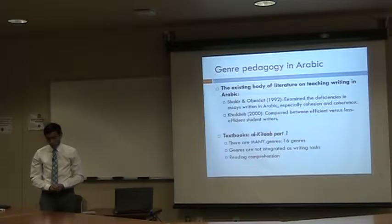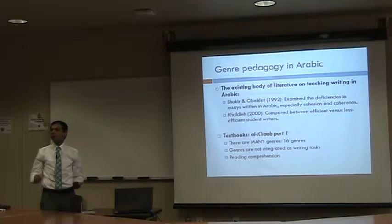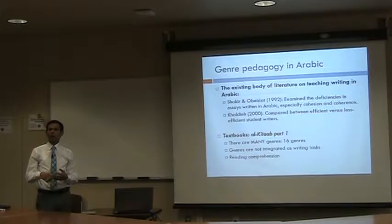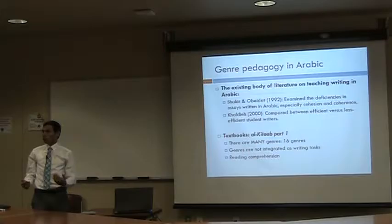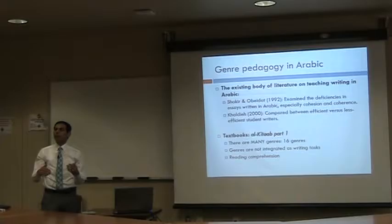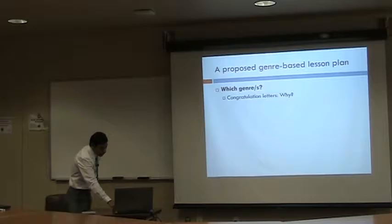What about textbooks? Are genres integrated in Arabic? The answer is yes — and I did a content analysis of the first part of Al-Kitab. It's interesting that we have at least 16 genres in Al-Kitab Part 1, including poems, job advertisements, news articles, and narrations. But the problem is these genres are presented only as reading comprehension — students are exposed to them to understand the meaning of the text, and then comprehension is checked. There is no additional step for the actual purpose of integrating the genre: developing writing skills.